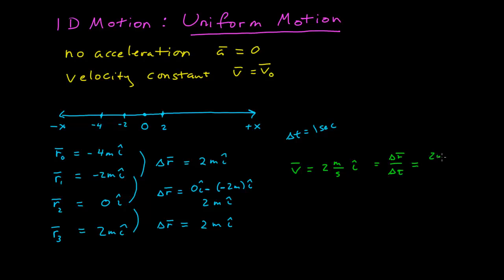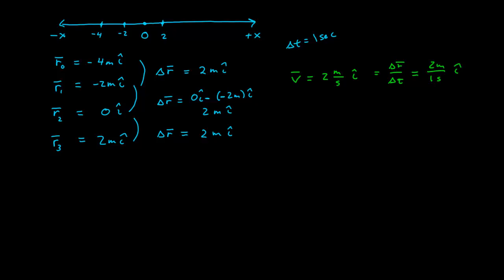This is 2 meters over 1 second, all in the i-hat direction. This is now consistent with the vector description we had before, but you can see it's all a little unnecessary. Because we're in one dimension, it's always i-hat and only ever i-hat. And so often we just eliminate the vector notation completely when we describe this sort of thing. Because any position can be identified with a single number, I'll just pick out the x component of that vector.